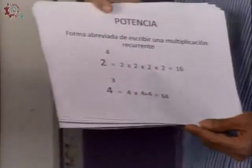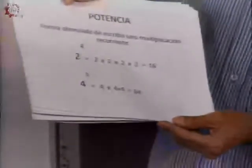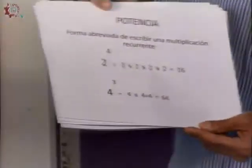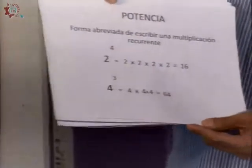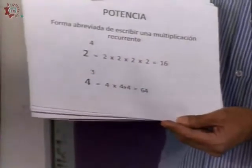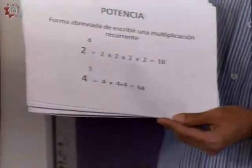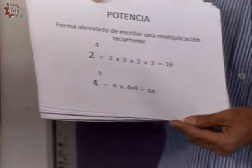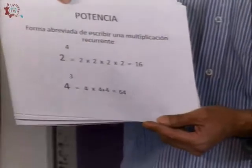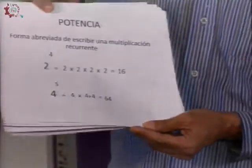En el primer ejemplo, dos elevado a la cuatro, sería multiplicar cuatro veces el dos: dos por dos, cuatro, por dos, ocho, por dos, dieciséis. En el segundo ejemplo, cuatro elevado al cubo significa que el cuatro hay que multiplicarlo tres veces: cuatro por cuatro, dieciséis, por cuatro, sesenta y cuatro.